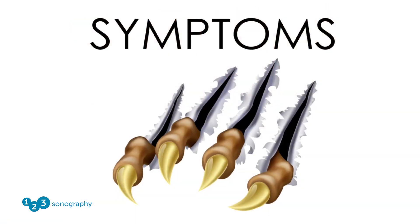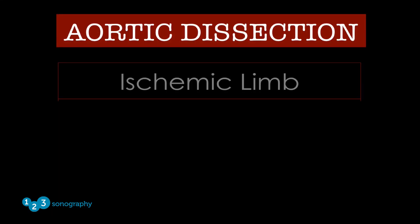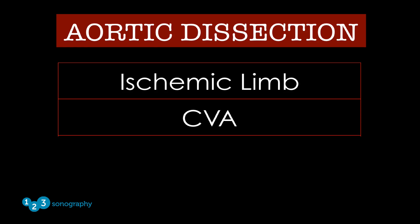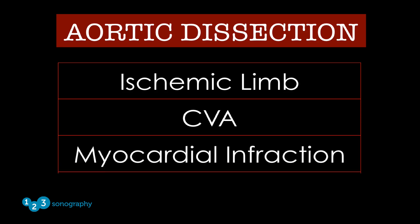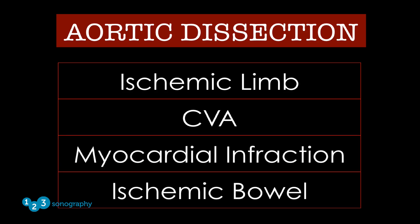The classic symptom for aortic dissection is the sudden onset of tearing or ripping pain in the chest, abdomen, and back. Physical signs associated with aortic dissection include ischemic limbs, stroke, myocardial infarction, or ischemic bowel.